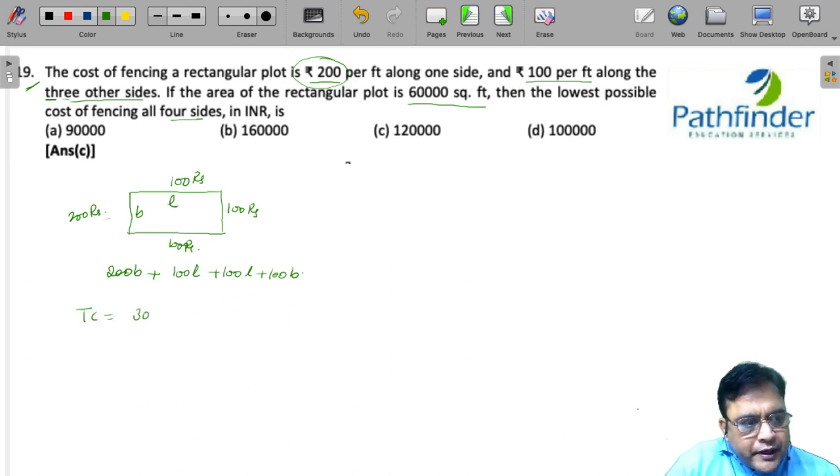We can easily write down the total cost as 300 times B plus 200 times L. Our task is to minimize this total cost, 300B plus 200L. And you are also given subject to a maximum area that is 60,000.